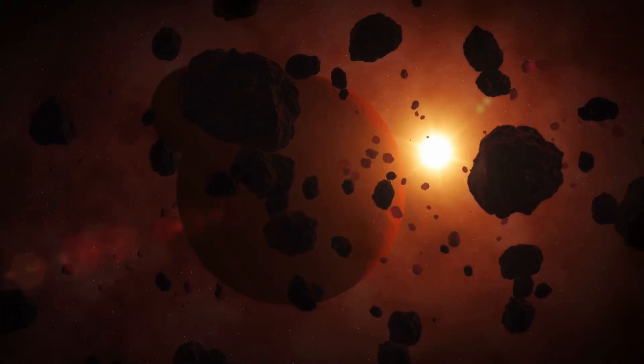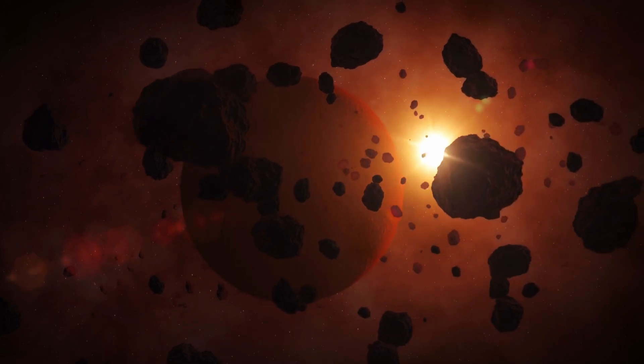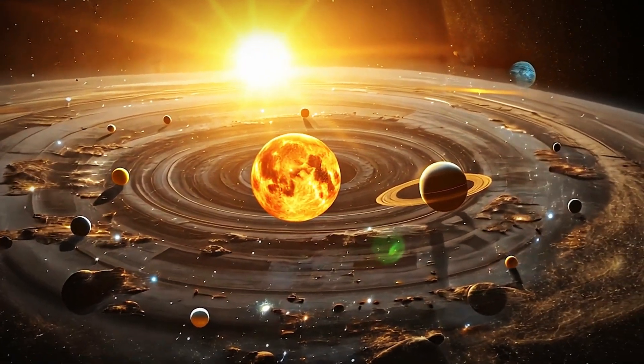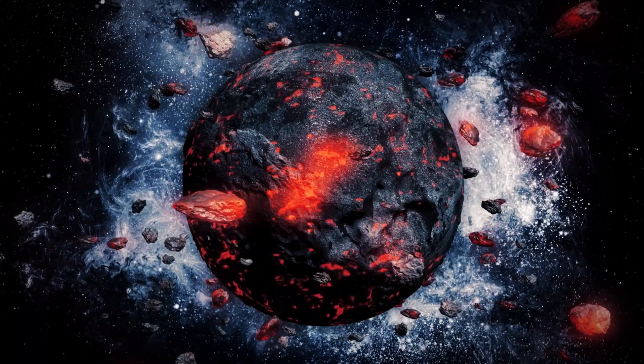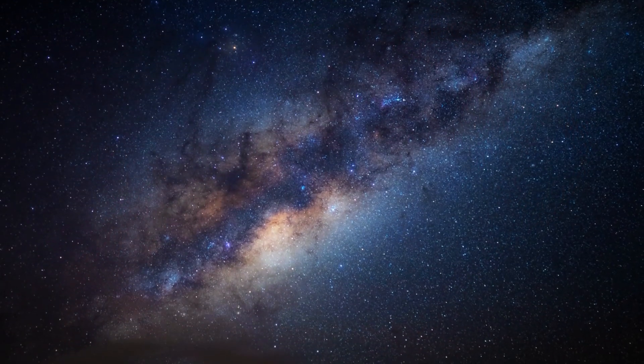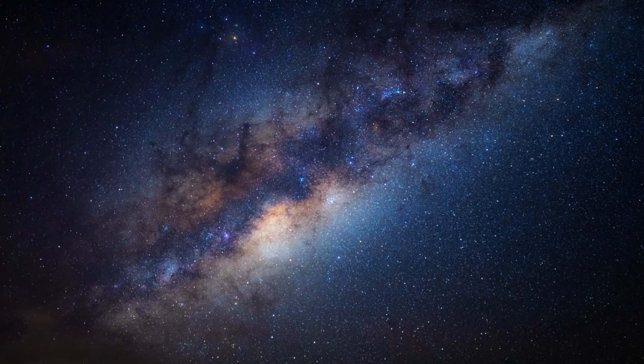A group of researchers is now confident that a hidden planet must exist at the edge of our solar system. What evidence led experts to this remarkable theory? Why hasn't Planet 9 been officially confirmed yet, and why is it so challenging to locate?